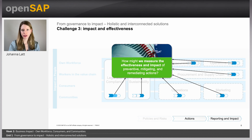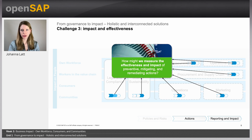The third challenge connects back to actions from challenge two, but focuses on effectiveness and impact. In order to do comprehensive reporting on corporate level, the outcome of each action needs to be measured. Did the action reach what it was supposed to reach? Did we mitigate negative impact on people, or maybe even create positive impact? Only when measuring actions taken can a business improve on future actions, better understand risks and efforts needed, and ultimately create true positive impact.